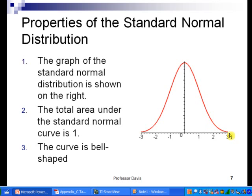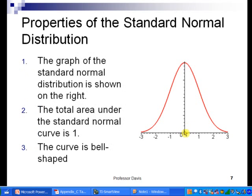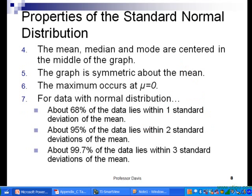Slide number eight has more properties. First, the mean, median, and mode are all centered in the middle of the graph. The mode is the highest point, the median divides the area under the curve into two equal areas, and since it's symmetric, the mean is the probability-weighted average. The graph is symmetric about the mean, and the maximum value occurs at mu equals zero.